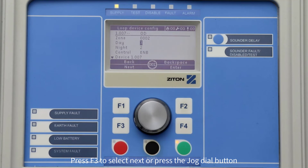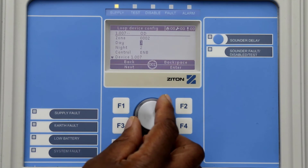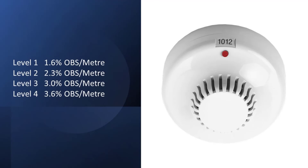For a smoke detector there are four possible daytime sensitivity settings: number one will set the device to 1.6 obscuration per meter, number two will set the device to 2.3 obscuration per meter, number three will set the device to 3.0 obscuration per meter, and number four will set the device to 3.6 obscuration per meter.